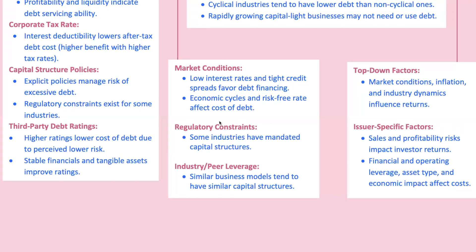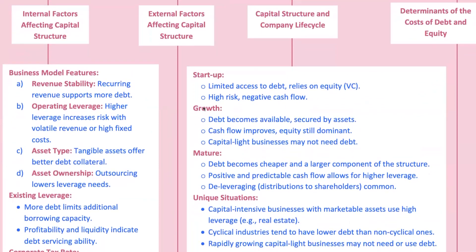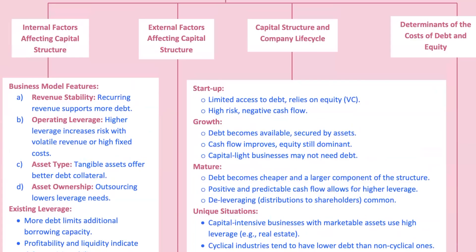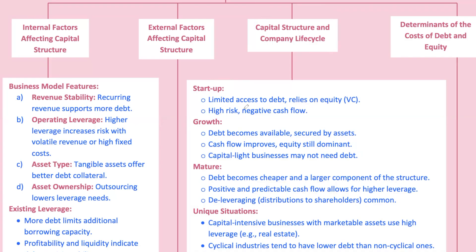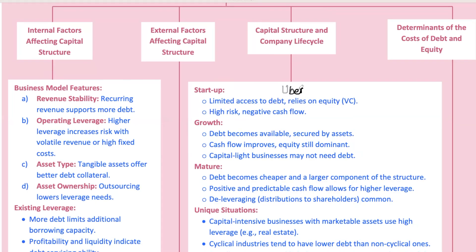Let's walk through how capital structure evolves as a company moves from a startup to a mature business. In the early days, startups are often cash consumers, burning through money to build their products and market themselves. With little to no revenue, these companies rely heavily on equity financing because debt is either unavailable or prohibitively expensive. Uber, during its early years, relied heavily on venture capital and equity financing to fuel rapid expansion, with little debt due to its uncertain revenue streams and high cash burn rate.